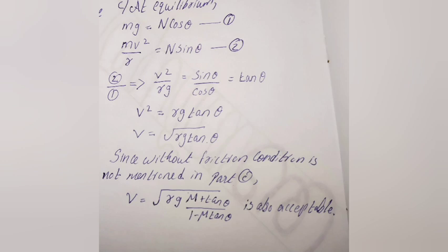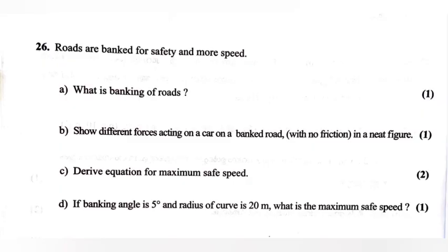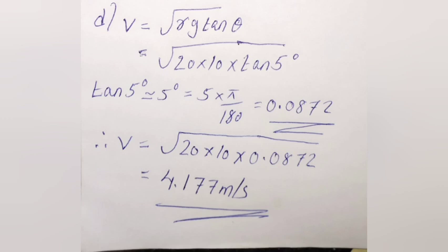Therefore v = √(rg·tanθ). Part d: If banking angle is 5° and radius of curve is 20 m, what is the maximum safe speed? v = √(rg·tanθ) = √(20 × 10 × tan5°) = √(20 × 10 × 0.0872) = √17.44 ≈ 4.177 m/s.